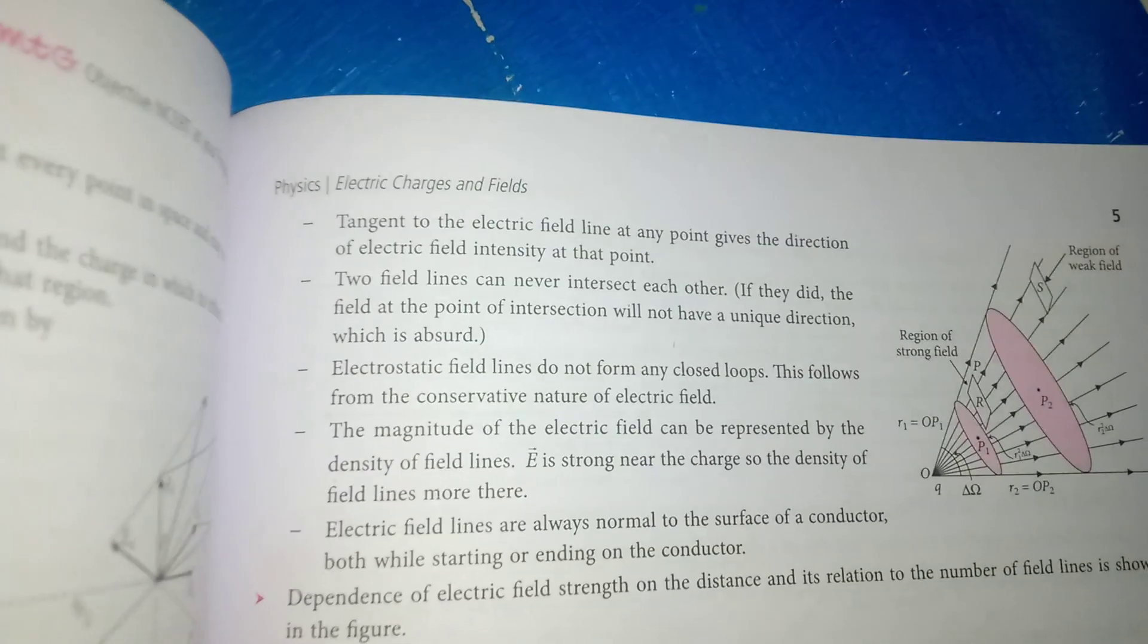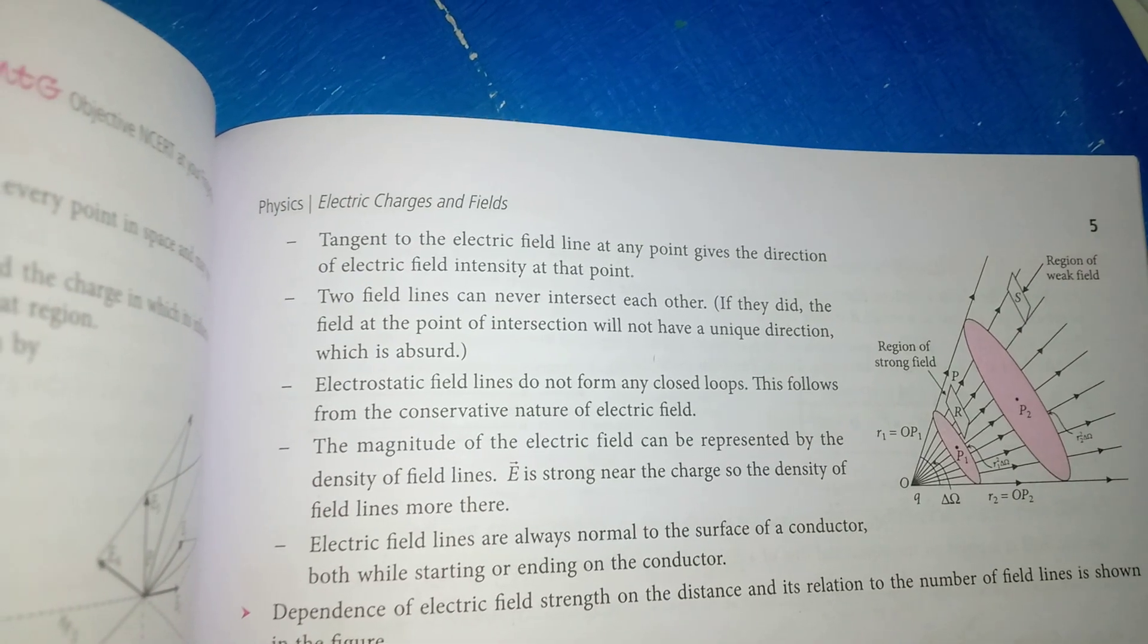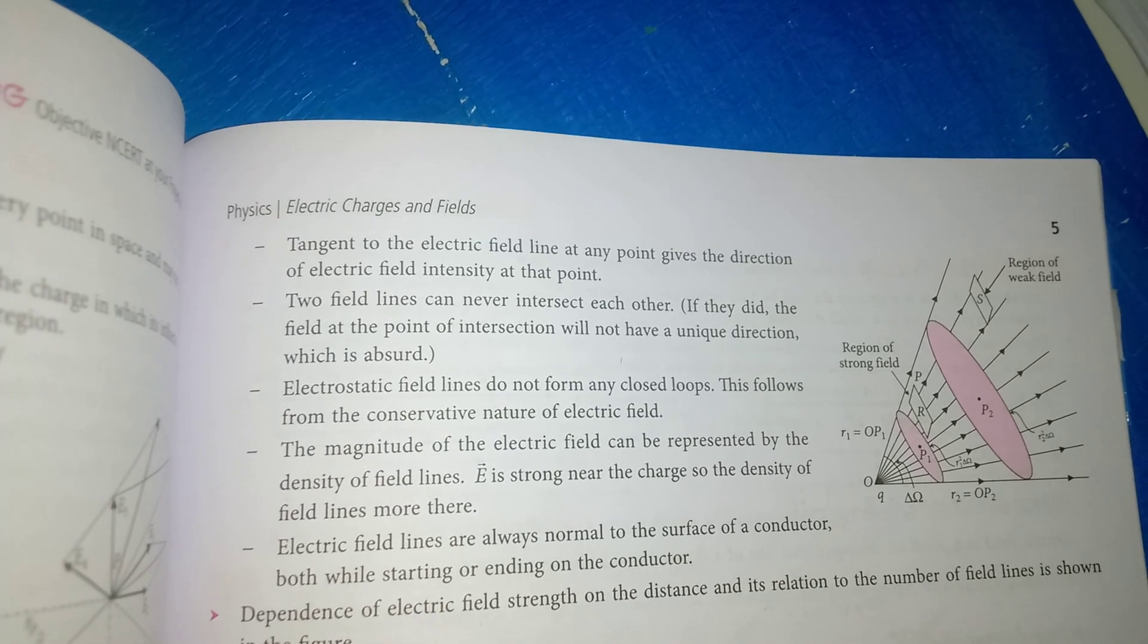Tangent to the electric field line at any point gives the direction of electric field intensity at that point. Field lines can never intersect each other.